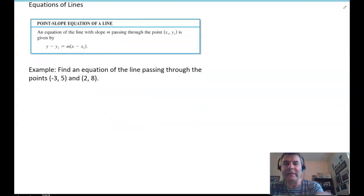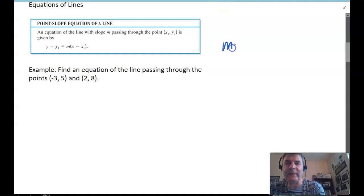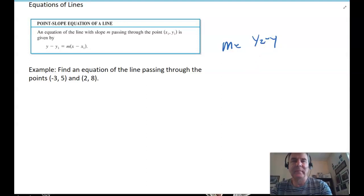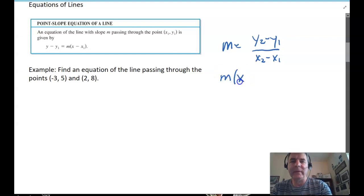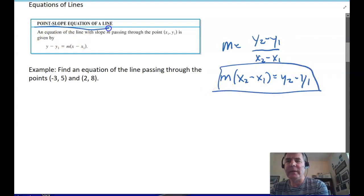So, if I take that slope equation, which, remember, was M equals y2 minus y1 over x2 minus x1. And if we multiply both sides of this equation by x2 minus x1, look what we get. We get M times x2 minus x1 equals y2 minus y1. And this is called the point-slope equation of a line.